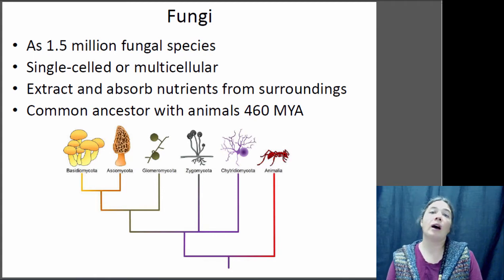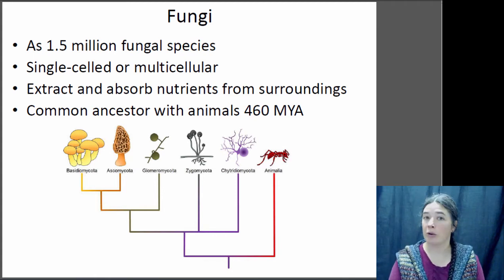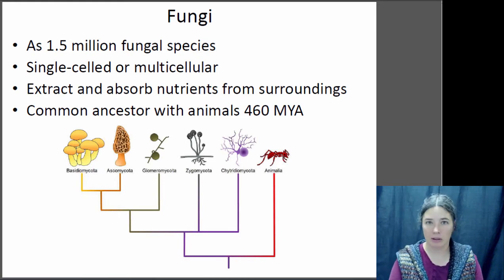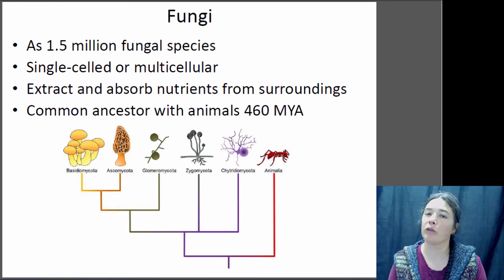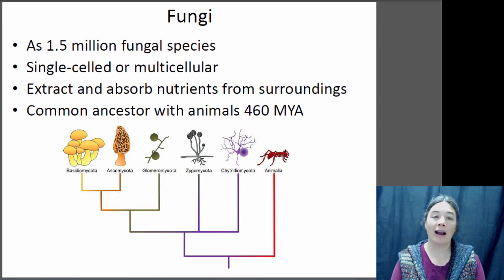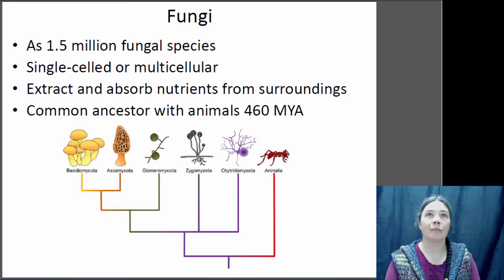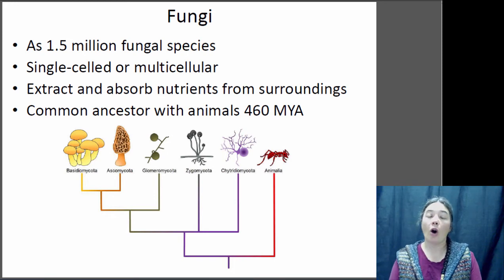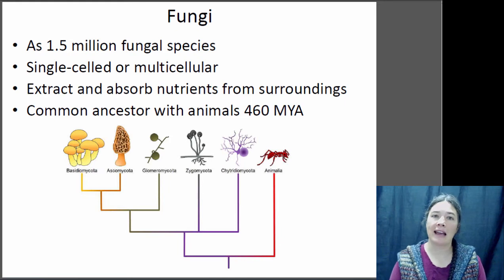They are all chemo-heterotrophs. A chemo-heterotroph has to get its energy from chemical bonds, and it gets those carbon-based molecules from other organisms — so they have to eat other things. They tend to extract and absorb nutrients from their surroundings. They do what we call external digestion, and they are actually very closely related to animals.